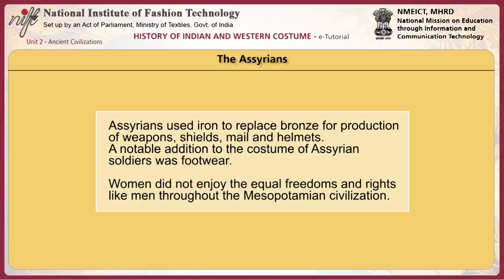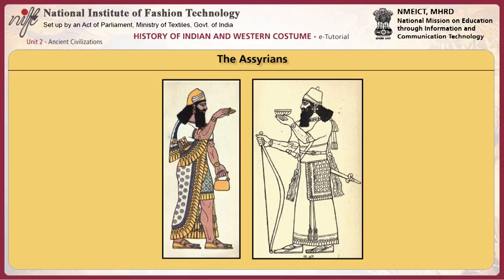Women did not enjoy equal freedoms and rights like men throughout the Mesopotamian civilizations. They had strict costume regulations like requiring a veil in public. King Assur Nasirpal is depicted wearing a long tunic tied at his waist and covering the back half of his figure in a small richly decorated shawl about 20 inches square. He also wears a belt, and wavy tassels which look like horse hair hang from his sword belt. A tassel also hangs from the back of his necklace and two ribbons from his cap band.